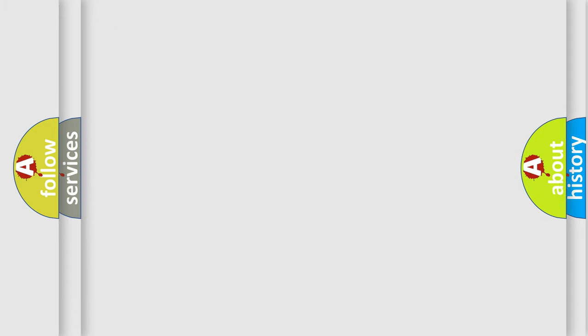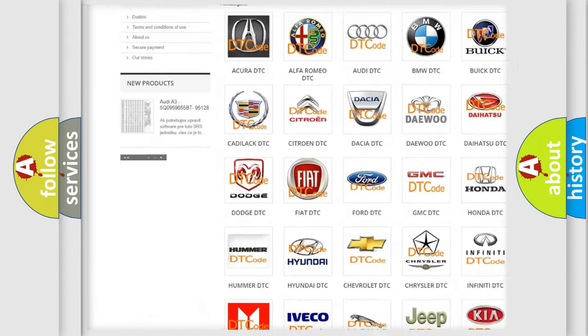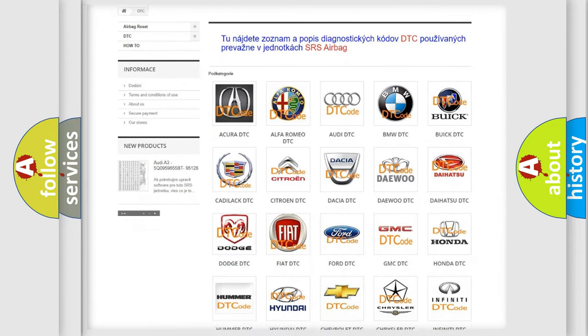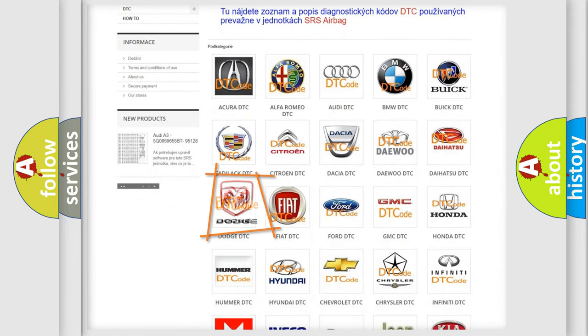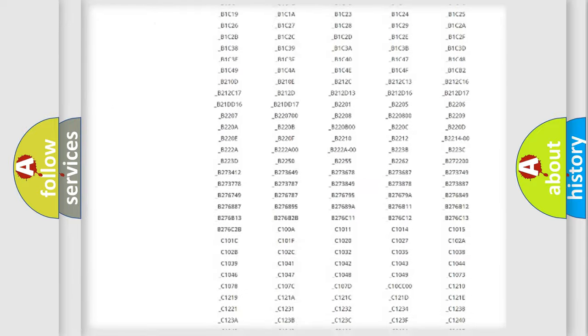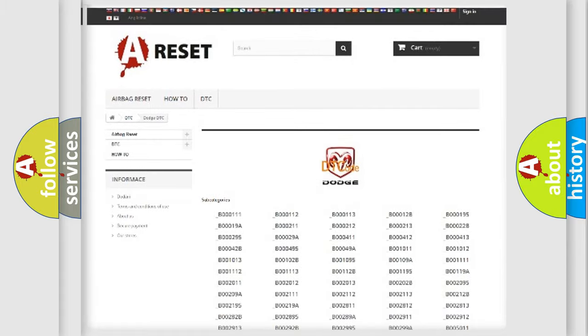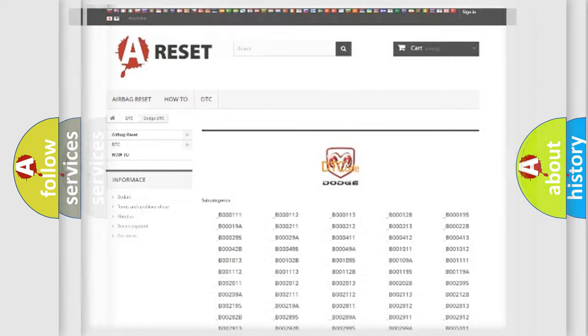Our website airbagreset.sk produces useful videos for you. You do not have to go through the OBD2 protocol anymore to know how to troubleshoot any car breakdown. You will find all the diagnostic codes that can be diagnosed in Dodge vehicles, and many other useful things.